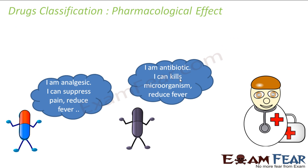Let's study in detail the pharmacological effect. Here we classify based on the effect. For example, this medicine is analgesic — it can suppress pain, it can reduce fever, it can do a lot of stuff. This particular medicine is antibiotic, which can kill microorganisms and reduce fever. So if I say that a particular medicine reduces fever, there are so many medicines that can do that. On the basis of all medicines which can reduce fever, you can classify them.